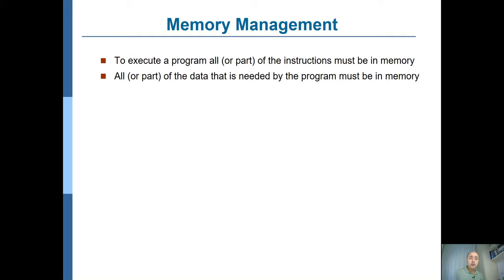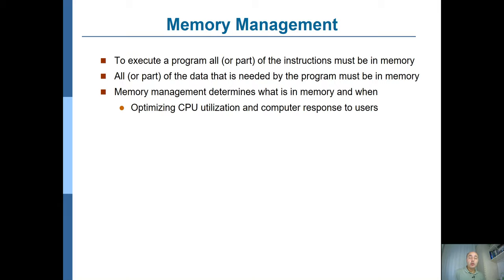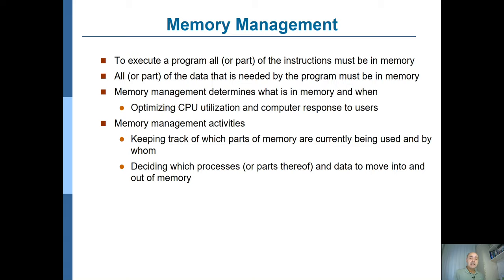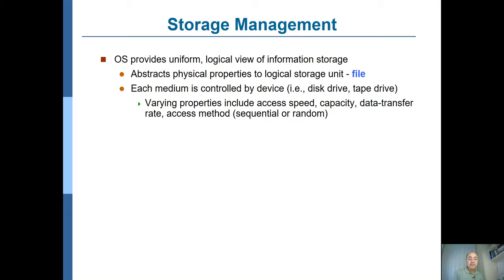The OS should manage memory properly to execute a process — either providing all the memory it needs or at least some part of it, which is something we'll discuss when covering virtual memory. Memory management tries to optimize CPU utilization and responsiveness. It provides activities like keeping track of which part of memory is reserved for which process, deciding which processes or parts of processes and data should be brought into or out of memory, and handling allocation and deallocation — in other words, reclaiming of memory space.